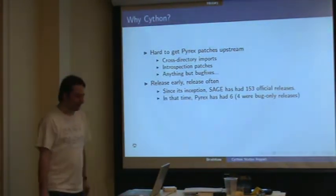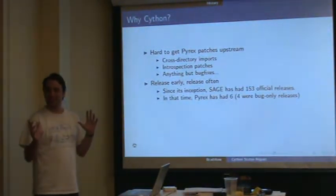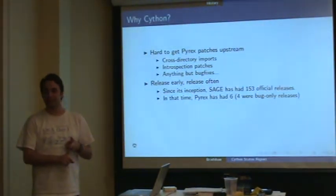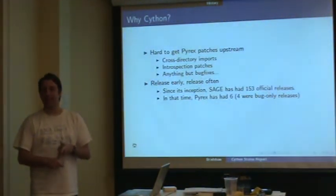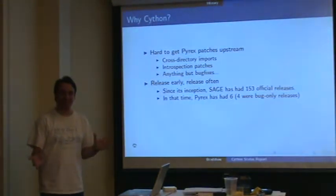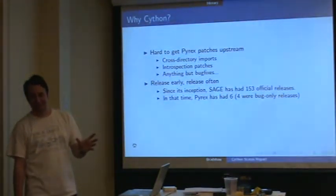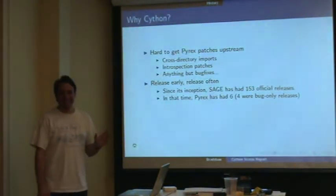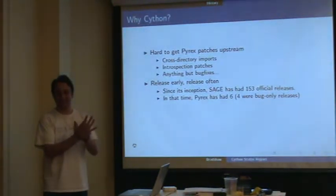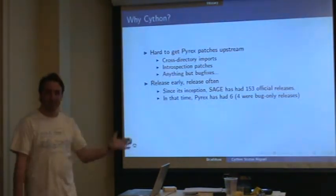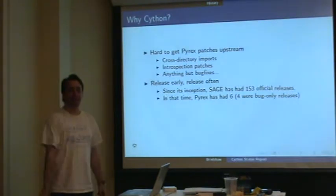In the same time, Pyrex had six releases — essentially two releases: 0.9.4, then a couple days later 0.9.4.1 and 0.9.4.1a. Then for about 18 months that was the standard version of Pyrex, until last January there was 0.9.5, then 0.9.5.1 and 0.9.5.1a. We want to be able to include things a little bit faster than that.